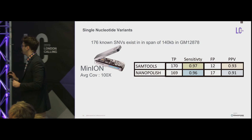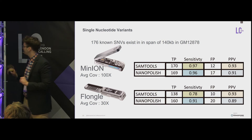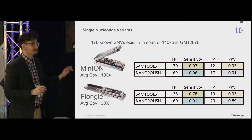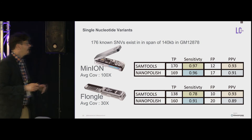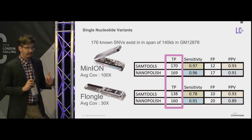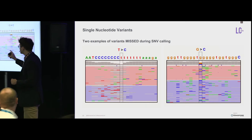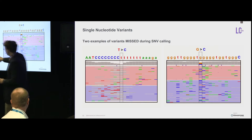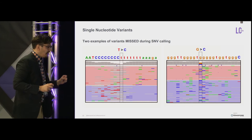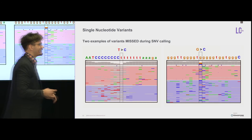We're getting 96–97% of variants identified by both SamTools and NanoPolish, with an average coverage of about 100X across all sites from the MinION. With lower coverage from the Flongal — about 30X — sensitivity is lower, but NanoPolish, which interrogates the electrical signal, is much more sensitive in that case. The variants we're still missing are in homopolymer regions: for example, a T to C transition where almost all reads show a deletion at that site, and a G to C transversion flanked by insertions, both making it difficult for algorithms to identify variants.